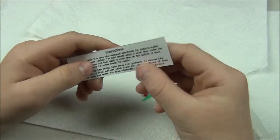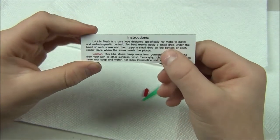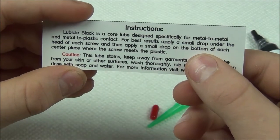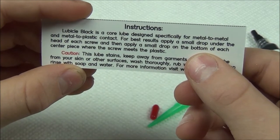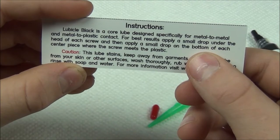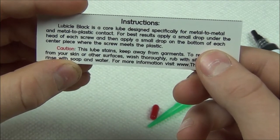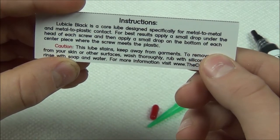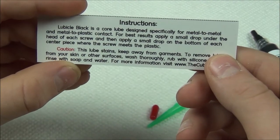So it comes with a little card here, read before use instructions. Lubical Black is a core lube designed specifically for metal to metal and metal to plastic contact. For best results, apply a small drop under the head of each screw and then apply a small drop on the bottom of each centerpiece where the screw meets the plastic.